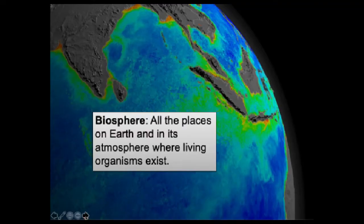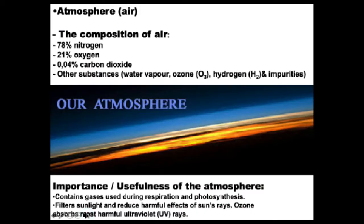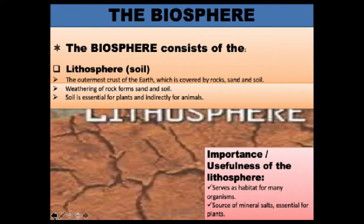The biosphere consists of three parts. First, we have the soil and rocks on the Earth's surface, which we call the lithosphere. Then we have the gases that surround the Earth, known as the atmosphere. Finally, we have the seas, rivers, and lakes forming the hydrosphere of the Earth.